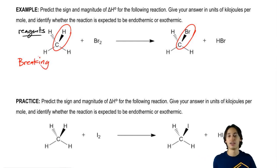If this is the breaking side, what sign of enthalpy should this have? Should it be positive or negative? It should be positive because it's taking energy to make these bonds come apart. So all of the values that I put over here are going to be positive.